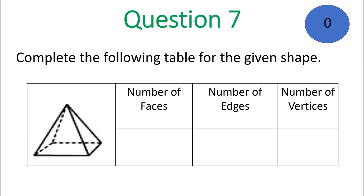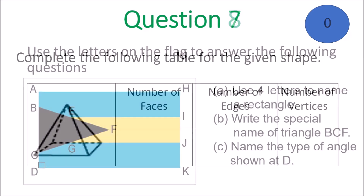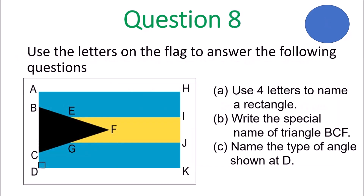You should be finishing off question 7 and we move on to question 8. Use the letters on the flag to answer the following questions: A — use four letters to name a rectangle; B — write the special name of triangle BCF; and C — name the type of angle shown at D. Go ahead, get it done, grade 6.